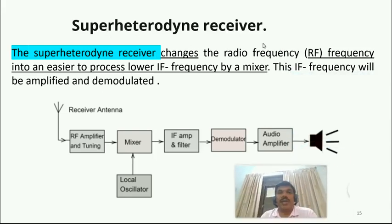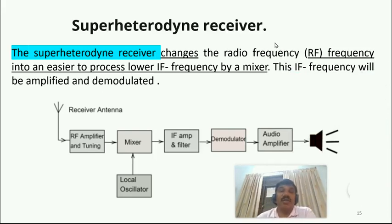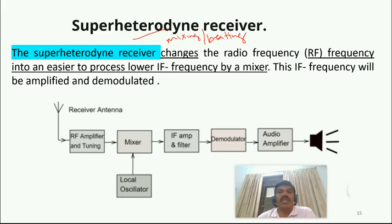This is a super heterodyne receiver used for FM transmission and reception — an FM receiver. Heterodyne means beating, so this is also called mixing or beating. The super heterodyne receiver is widely used, and it changes the radio frequency — RF — into a lower intermediate frequency for easier processing.